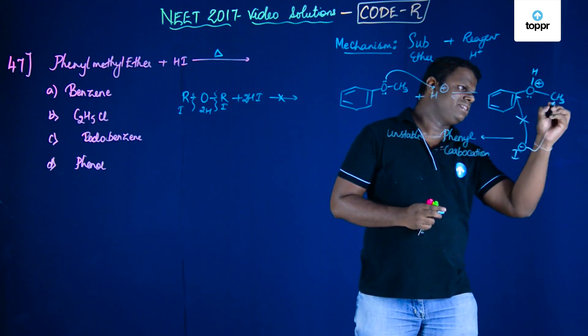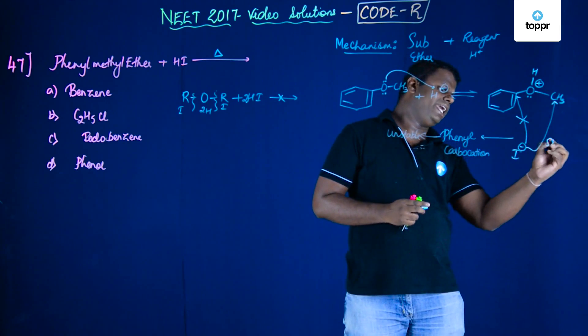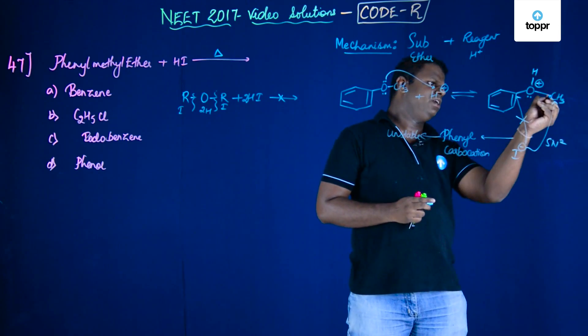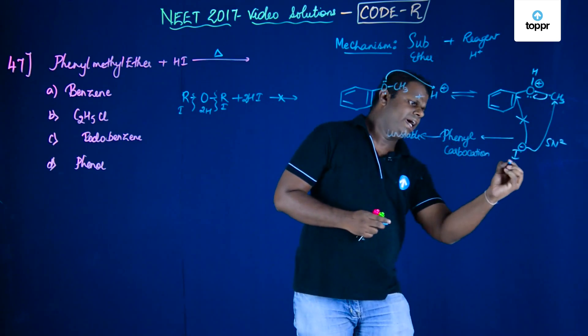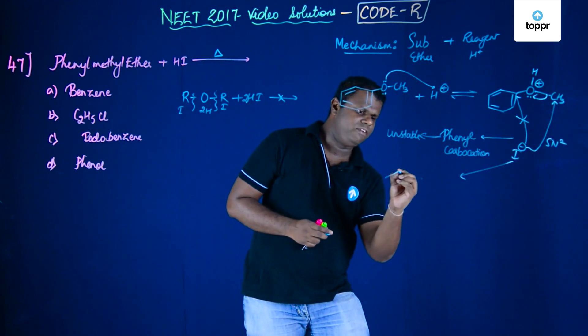I- would attack CH3. This is going to be an SN2 reaction as a result of which bonded electrons would be shifted towards oxygen and that's how you could get phenol.